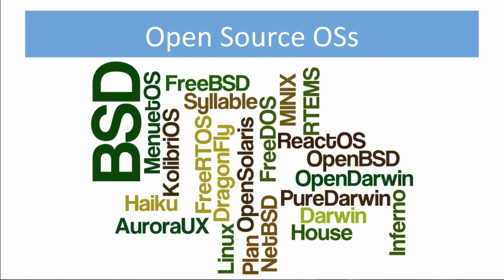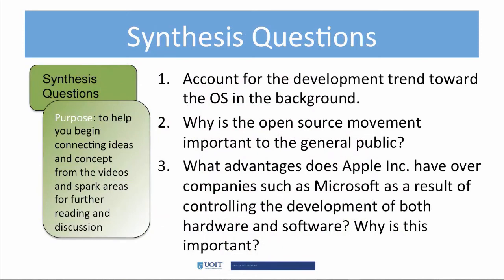Linux is probably the most widely known version of open source operating systems. Ubuntu and Red Hat versions of Linux are examples of open source operating systems that have been modified to support certain industries and groups of people. To some extent, open source program development has eaten into the business plans of Microsoft and Apple. Other open source projects such as Android, Mozilla Firefox, and OpenOffice continue to offer mainstream alternatives to the offerings of proprietary companies.